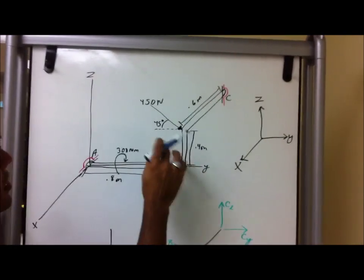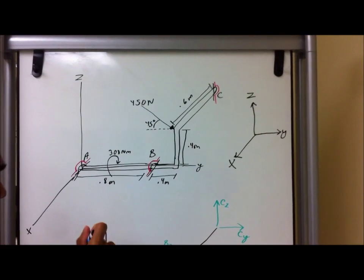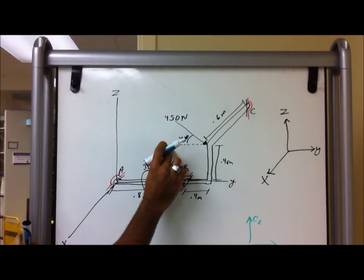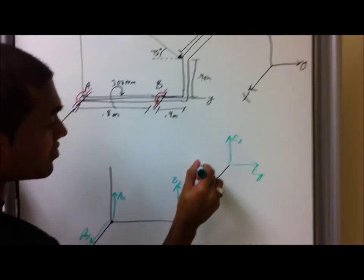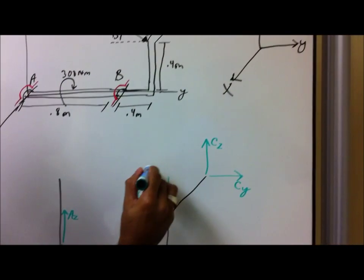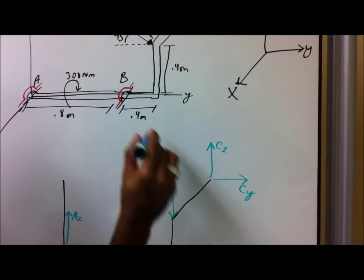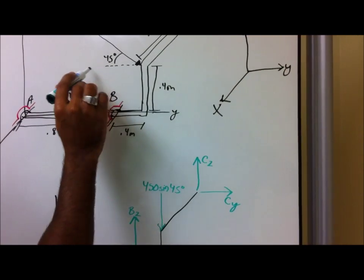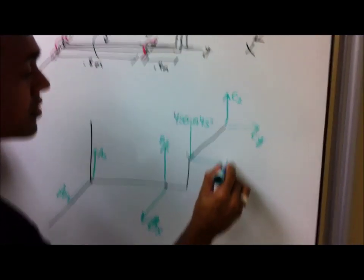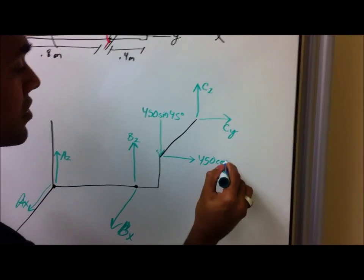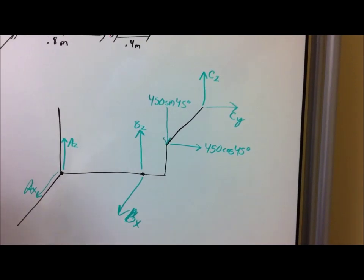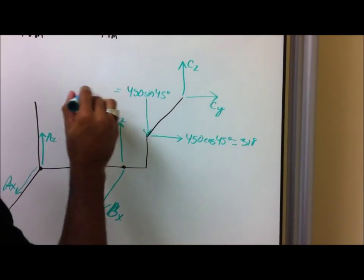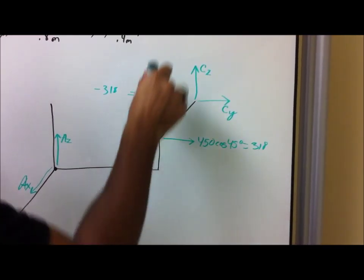This is important to know — for example, this 450 Newton force, we're going to break this down into its force components: going down and going across. So we're going to have a force of 450 sine of 45 degrees, as well as a force going in this direction of 450 cosine 45 degrees. Both of these equal out to be 318, and this one would be a negative 318 because it's going down.